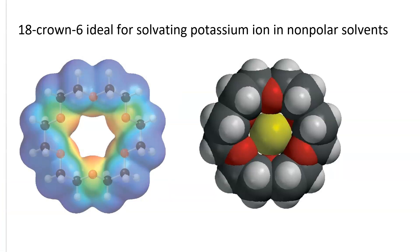18-crown-6 is ideal for solvating potassium ions in non-polar solvent. So say you wanted to dissolve potassium fluoride in benzene, you would add some 18-crown-6. This would solubilize the potassium fluoride because it creates an ideal binding pocket for the metal ion.